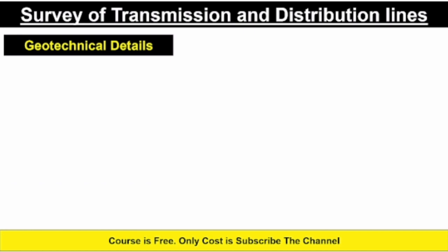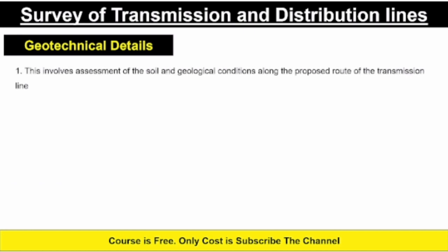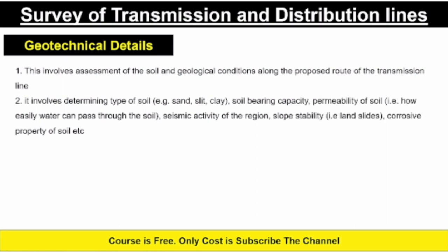Geotechnical details involve assessment of the soil and geological conditions along the proposed route of the transmission line. This includes determining the type of soil — sand, silt, clay — soil bearing capacity, permeability of the soil, how easily water can pass through, seismic activity of the region, slope stability, and the corrosive property of the soil. You have to note down all these things.